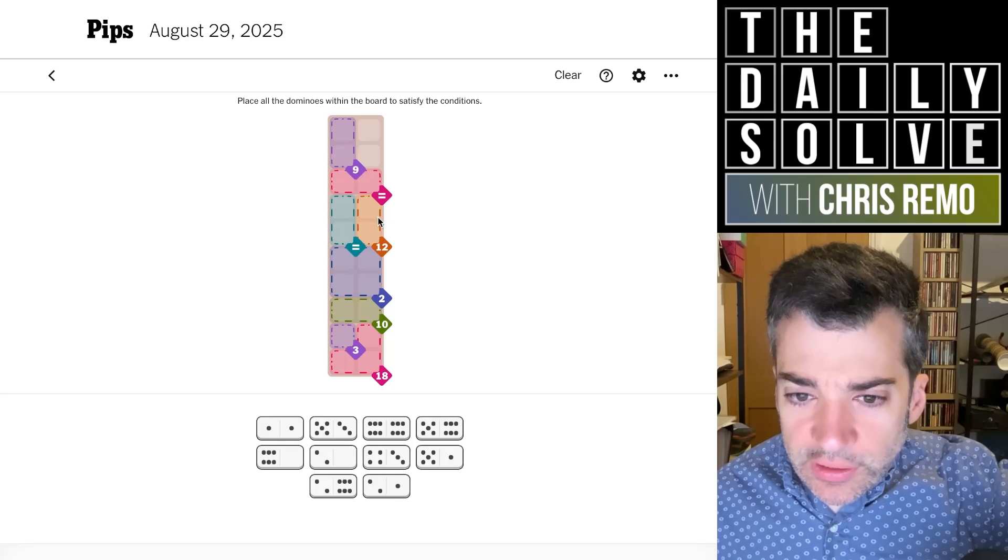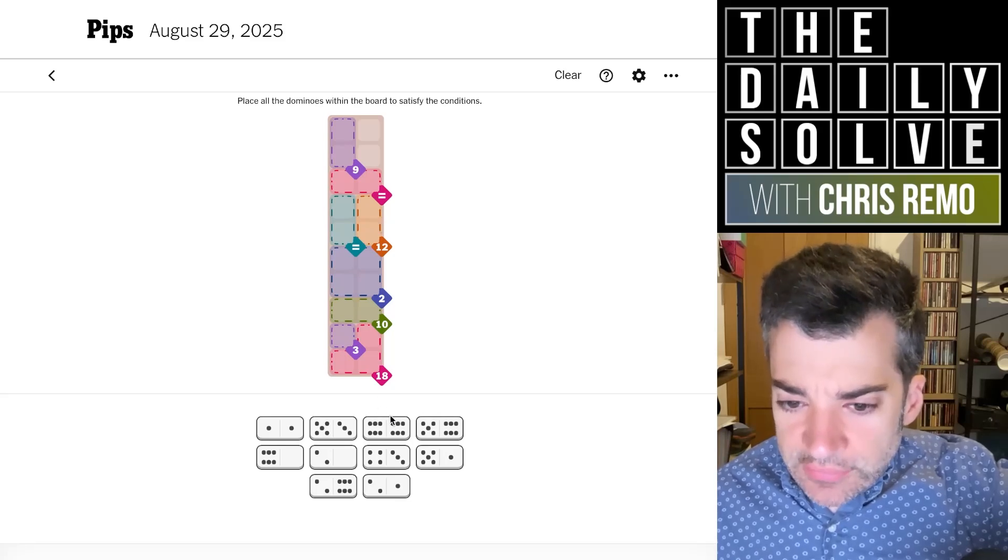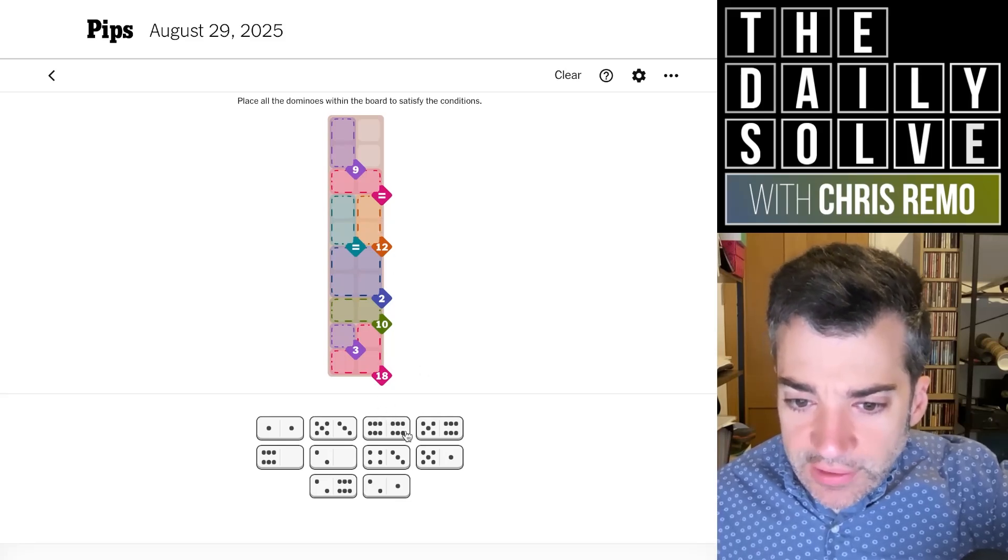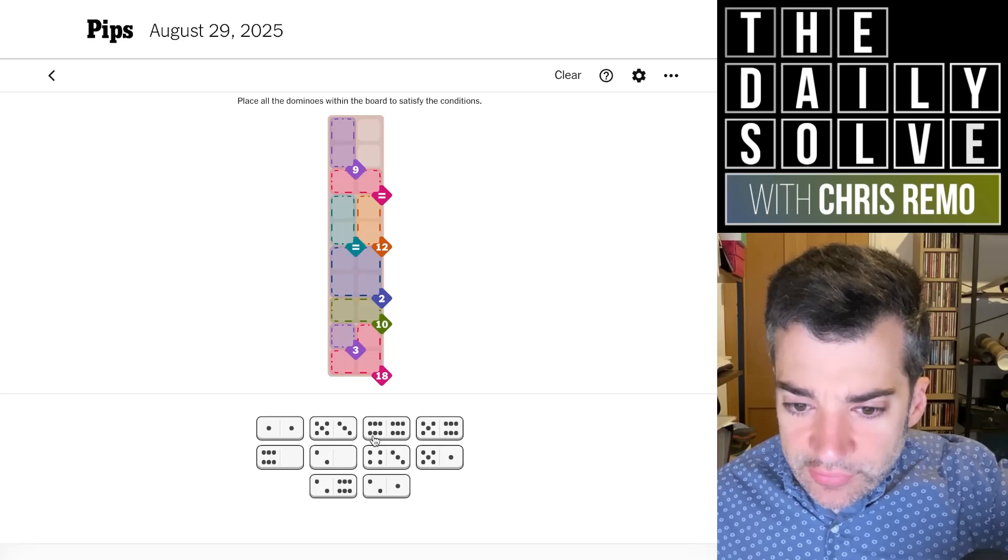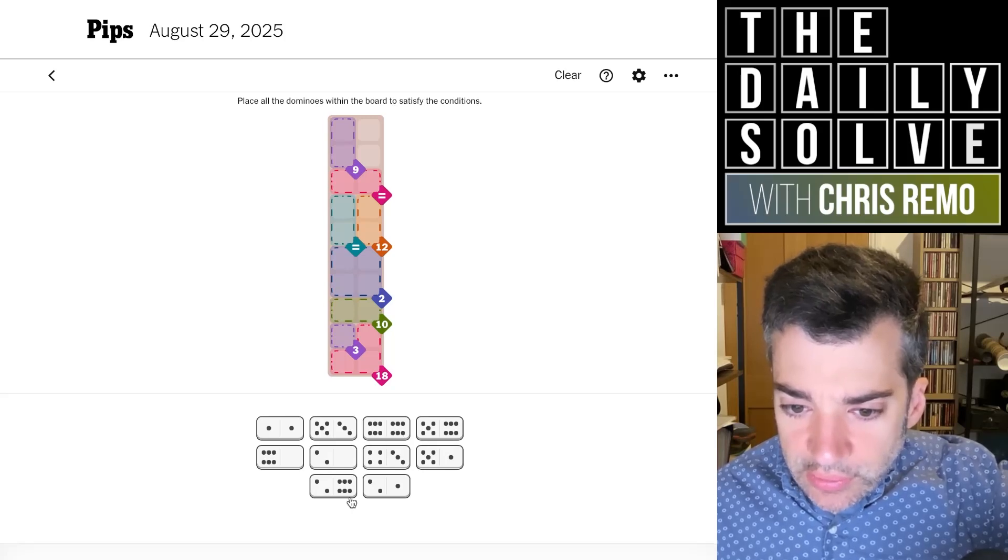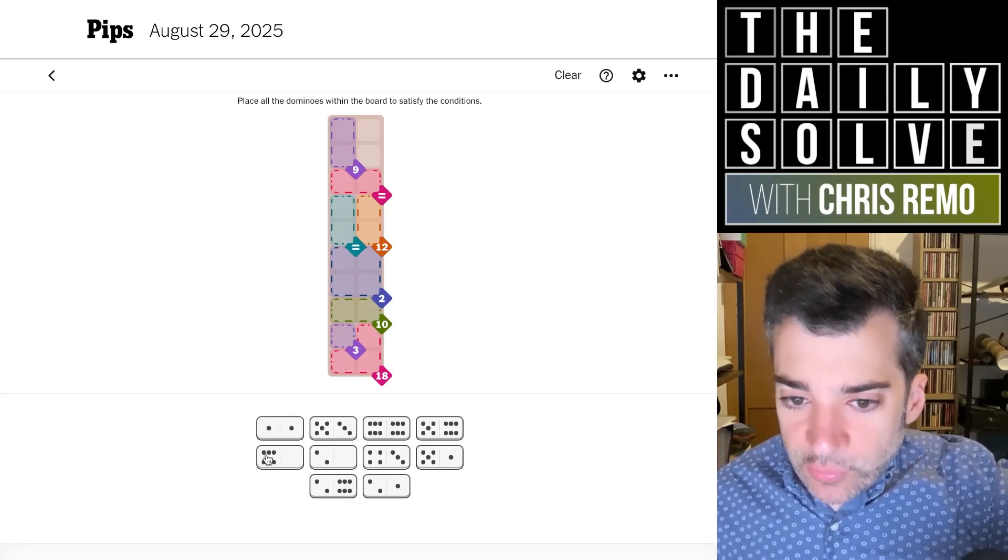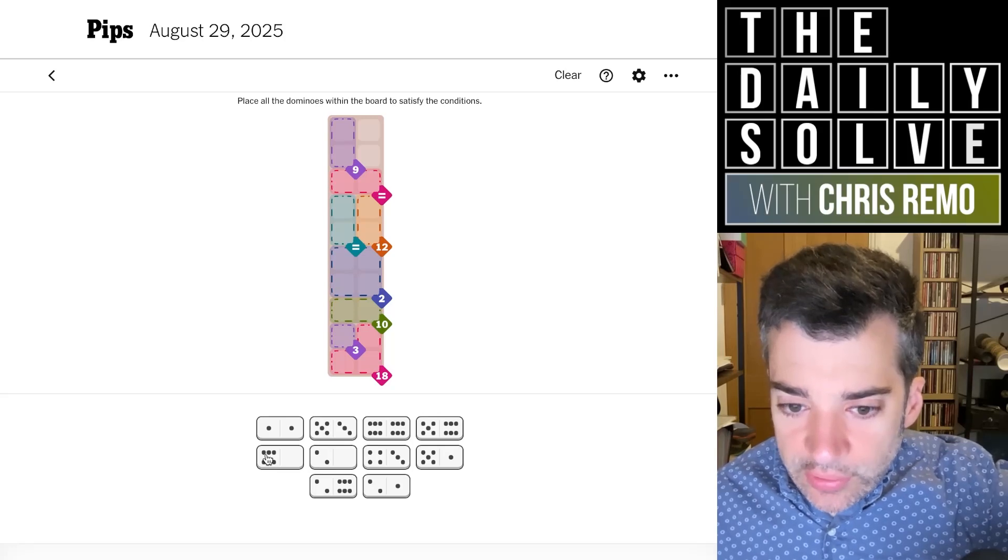And then 12 will be two sixes. So we need a total of five sixes across the 12 and the 18. I wish we could reorder these down here so I could just kind of get them in order. And we have exactly five sixes, so we do need to think about how that works.